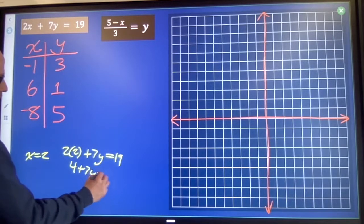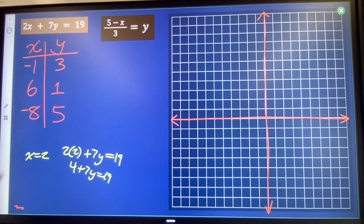4 plus 7y equals 19, 2-step equation, solve for y, right?